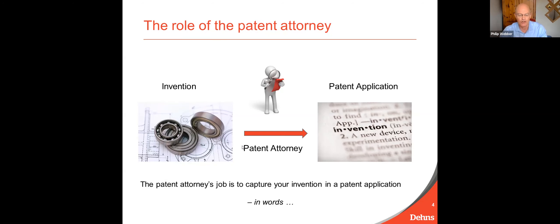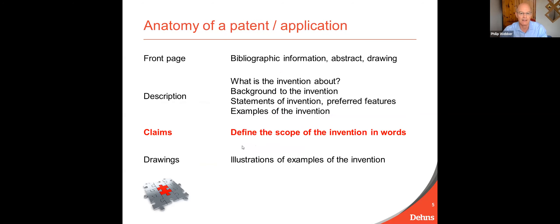That illustrates the sort of job the patent attorney has to do in order to convert a possibly complex invention into words in the patent application. The patent attorney produces a patent application — what is a patent application? A good patent application is simply a 10, 20, or even 100-page book on your invention.